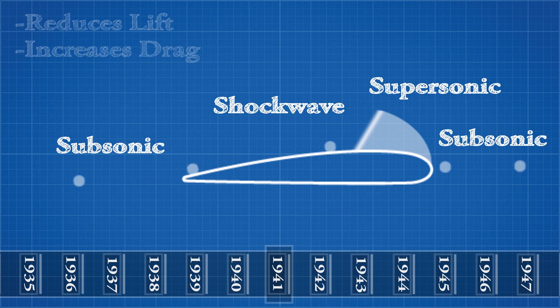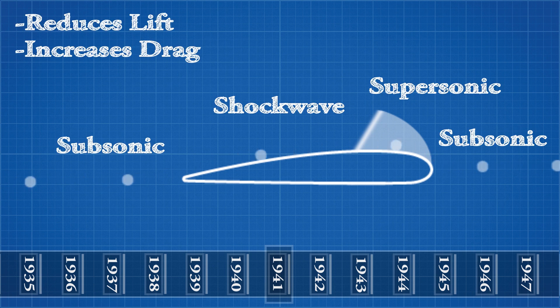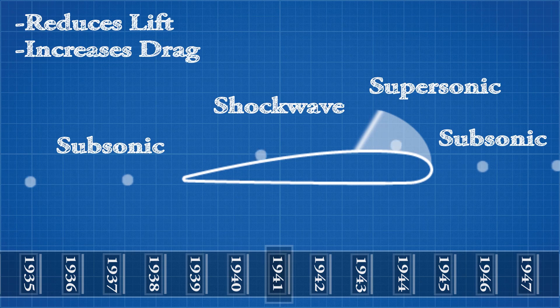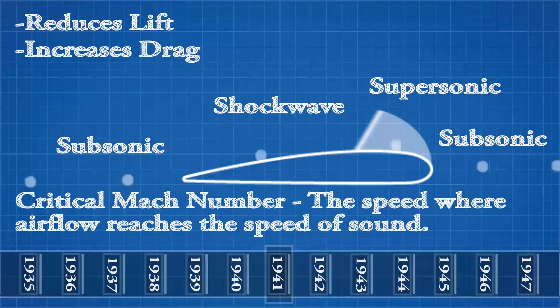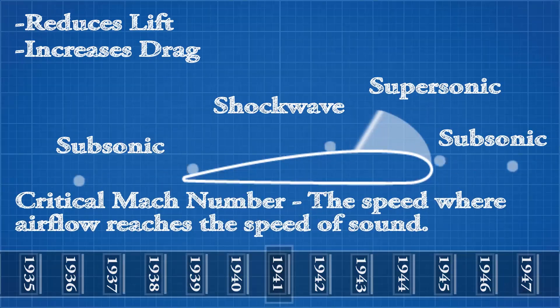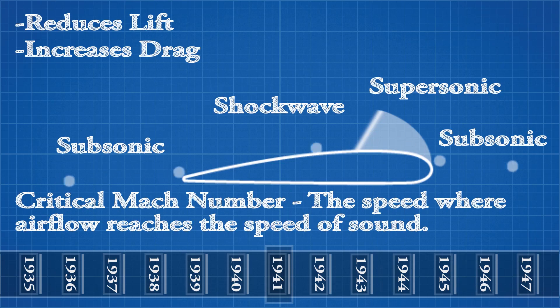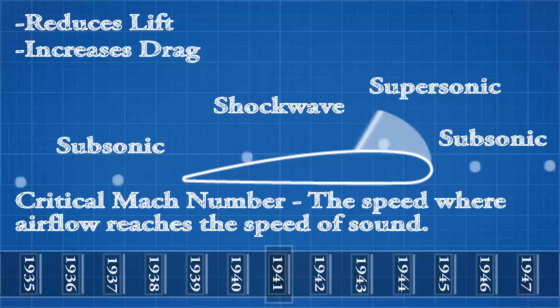These shock waves will reduce the lift and increase the drag on the wing. The speed at which shock waves begin to appear is called the critical Mach number, and Ralph Verden reached that speed during his high-speed test dive.